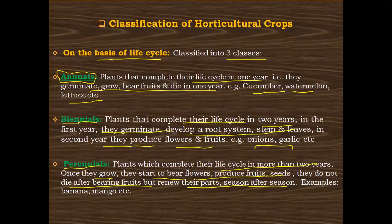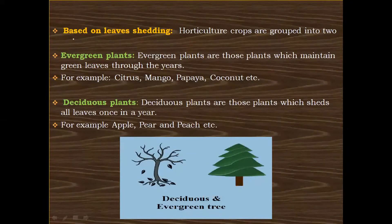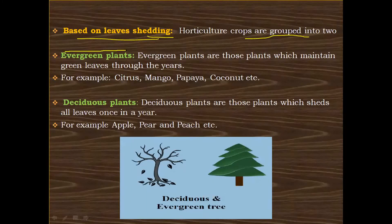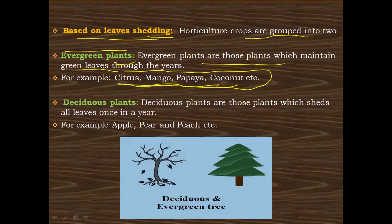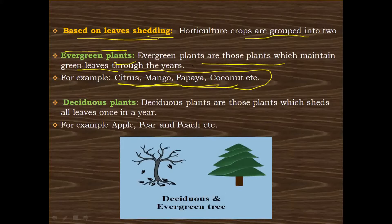The next classification of horticultural crops is based on leaf shedding — that is, whether a specific plant sheds its leaves or not. These are grouped into two classes. The first one is evergreen plants. Evergreen plants are those plants which maintain green leaves throughout the year. For example, citrus, mango, papaya, and coconut.